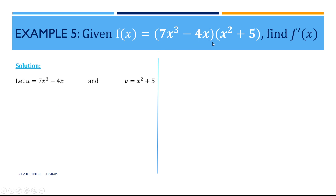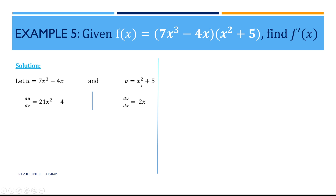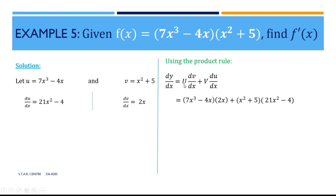Solution: We let u equal the first function and v equal the other function, then differentiate each one. Differentiating 7x cubed gives 21x squared, and the differential of minus 4x gives minus 4. So du/dx equals 21x squared minus 4. Differentiating v: the differential of x squared is 2x, and the differential of 5 is 0. So dv/dx equals 2x. Substituting into the product rule: u is (7x cubed minus 4x) multiplied by dv/dx which is 2x, plus v which is (x squared plus 5) multiplied by du/dx which is (21x squared minus 4).